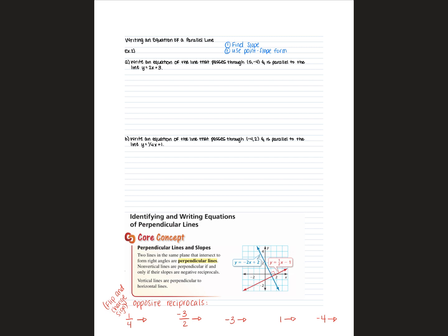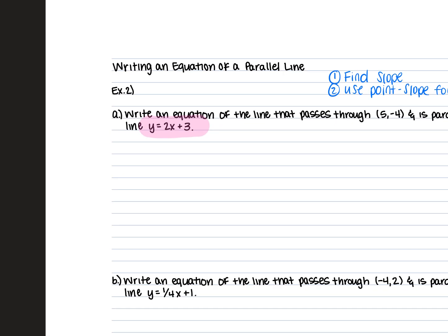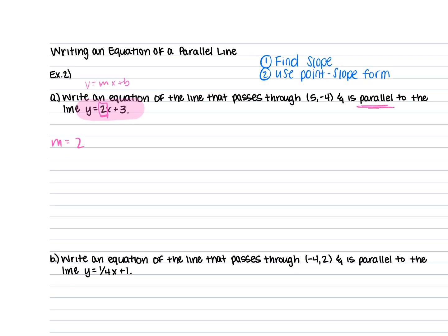On the next page, Example 2: we have to write an equation of a line that passes through the point (5, negative 4) and is parallel to the given line. We want to find the slope of that line. The given line is already in y = mx + b form — slope-intercept form — so the slope is 2. Since our new line is parallel, it has the same slope: 2. We only use the given equation for its slope and ignore everything else.